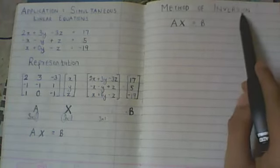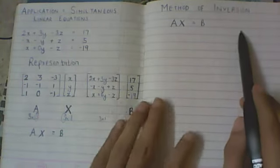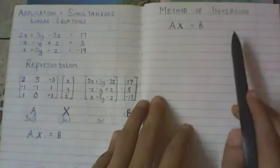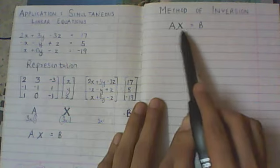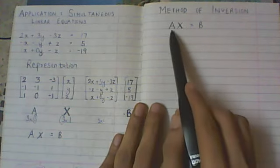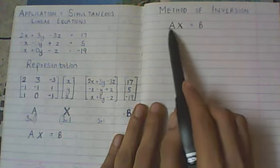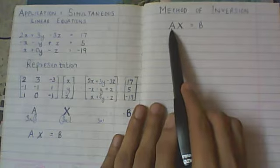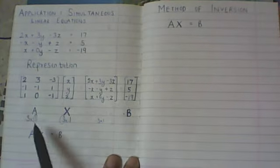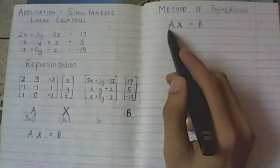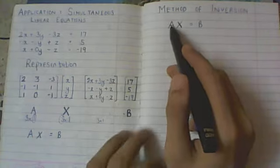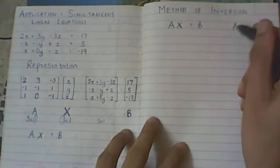That method is that of inversion. It basically uses the inverse of a matrix and you can guess that we will be able to find the inverse of this matrix because this is a square matrix. It is a 3 by 3 matrix in this case. And what happens?